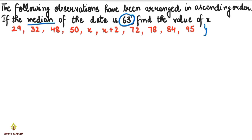Now, to find the median, we arrange the data in ascending order. We have to find out what the value of x is. Here is the value of x. First, let's look at what n is — n means number of observations.